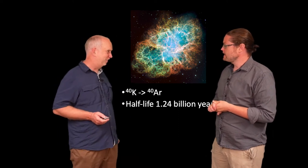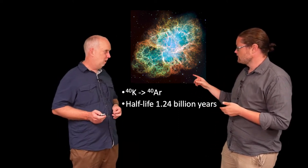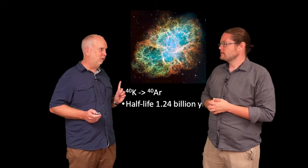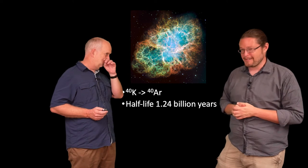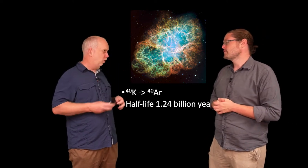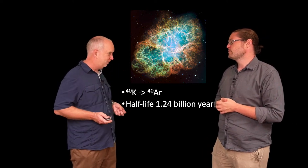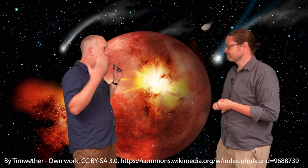The potassium-40 is converting into argon. This is interesting because argon is a gas, and it doesn't bond to anything — it's chemically incredibly inert. So you'd generally expect the argon to get blown away, just leaving the potassium around. When rock is molten, any argon produced just leaks out, wanders off into space, and gets lost.